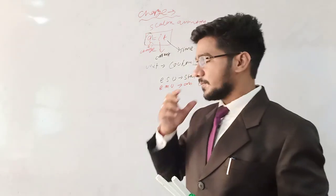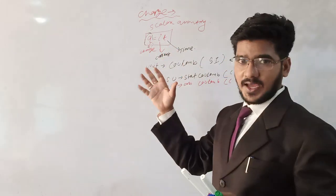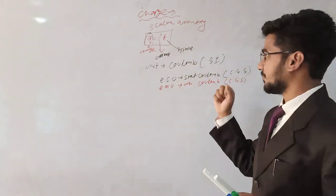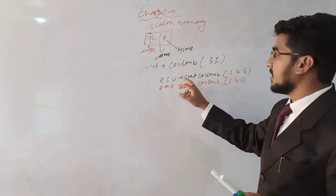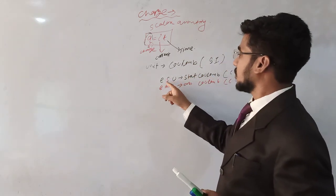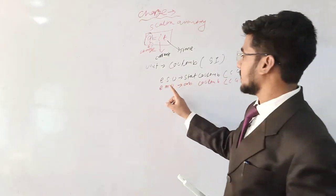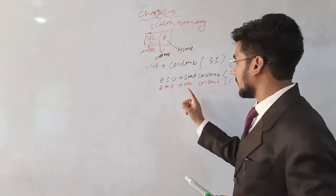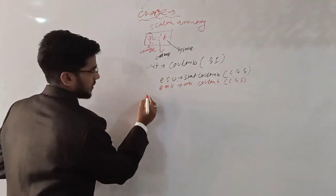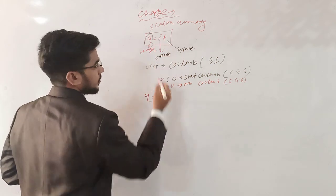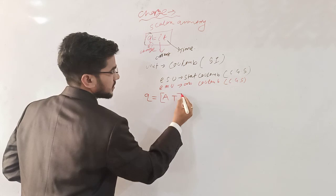So to summarize: charge is a scalar quantity; its formula is Q = IT, where Q is charge, I is current, and T is time; the unit of charge is coulomb in the SI system; in the CGS system there are two units — ESU (electrostatic unit or stat coulomb) and EMU (electromagnetic unit or ab-coulomb). The dimension of charge is Q = A·T.